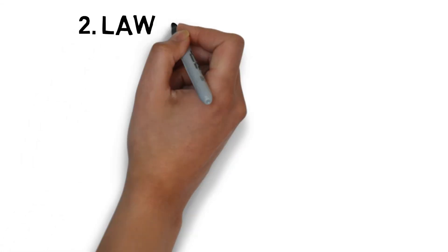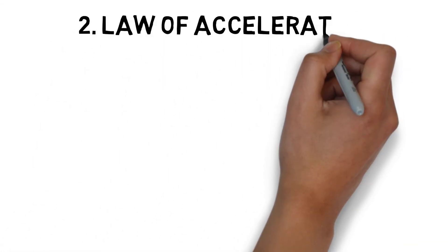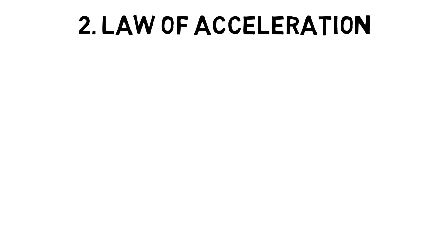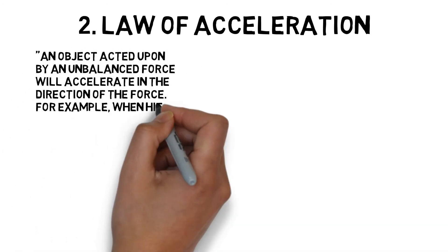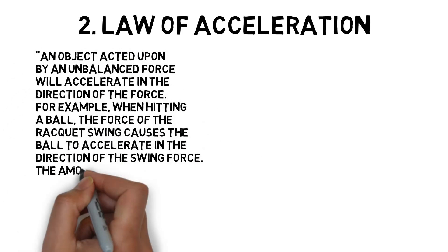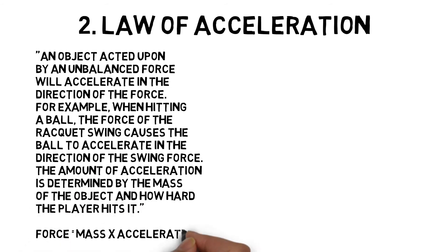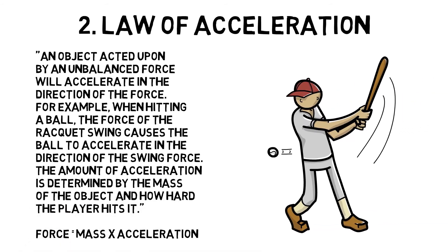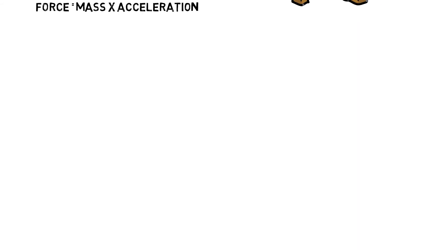Law of acceleration. An object acted upon by an unbalanced force will accelerate in the direction of the force. For example, when hitting a ball, the force of the racket swing causes the ball to accelerate in the direction of the swing force. The amount of acceleration is determined by the mass of the object and how hard the player hits it. Force equals mass times acceleration.